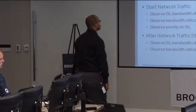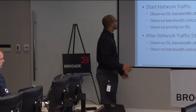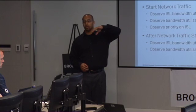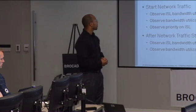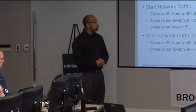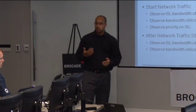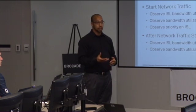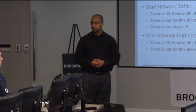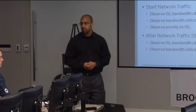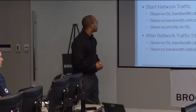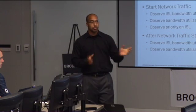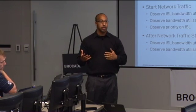To demonstrate this, I'm going to start iSCSI traffic on the server that's set up with iSCSI. We'll look at the bandwidth utilization and see that frames are flowing on a single priority — in this case priority four, which is the accepted standard for DCB iSCSI. Then we'll look at the bandwidth on the storage port as well as the ISL.